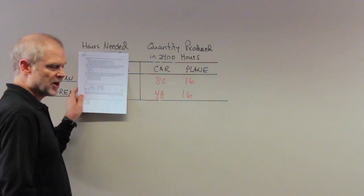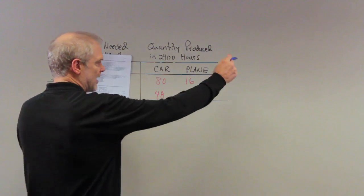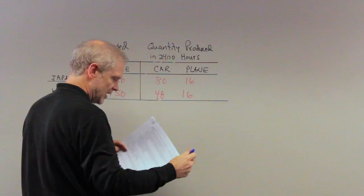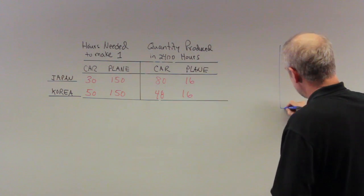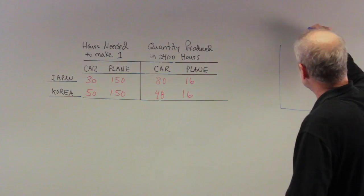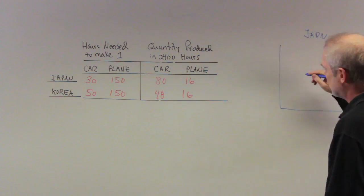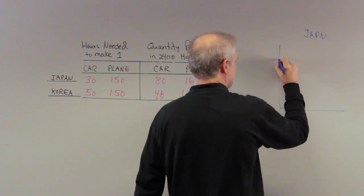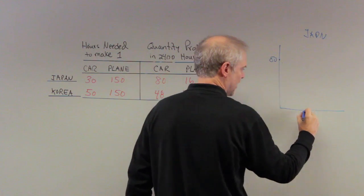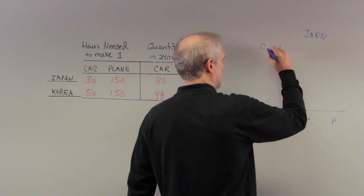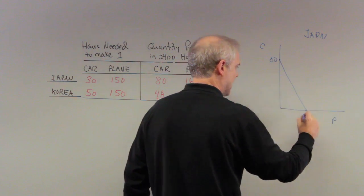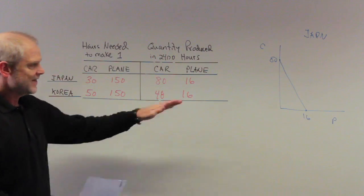So often, this would be our production possibility frontier. We'd have a graph. We'd have Japan and Korea, and I'll draw one for you right now. It would look something like this. We've done this in class. If this is Japan, their production possibility frontier would look like this. We'd have 80 cars here, and we'd have something like 16 planes here. So planes and cars, and that would be Japan's production possibility frontier. That's what it would look like.